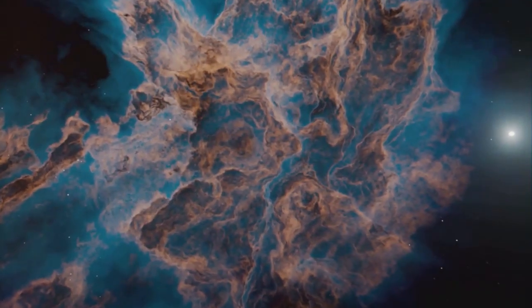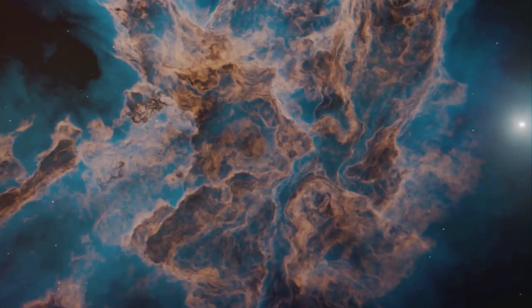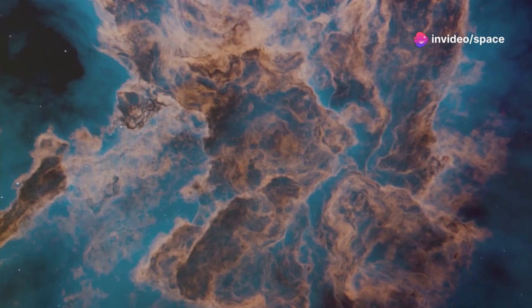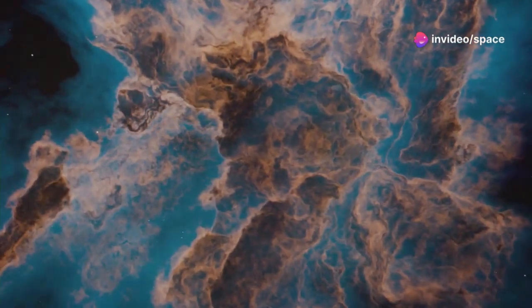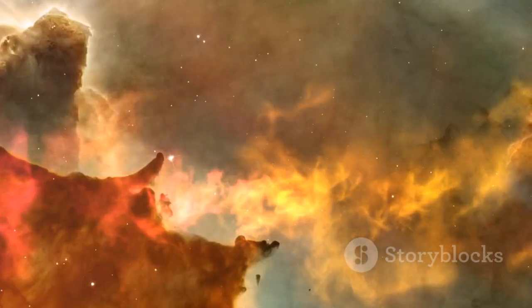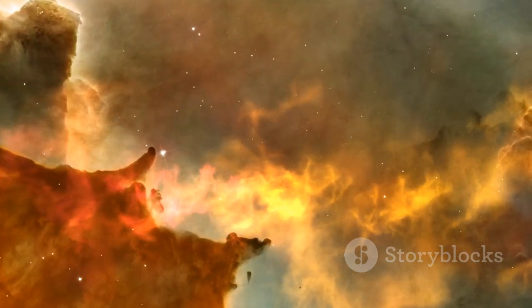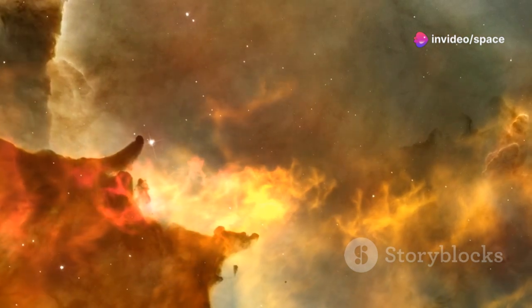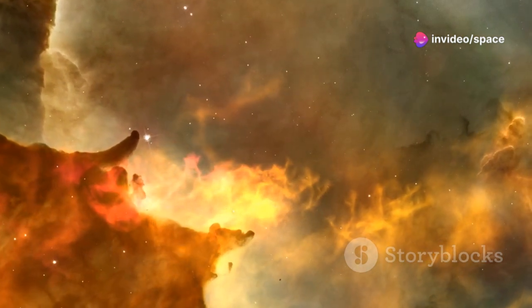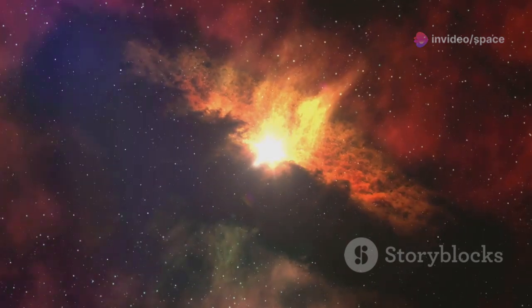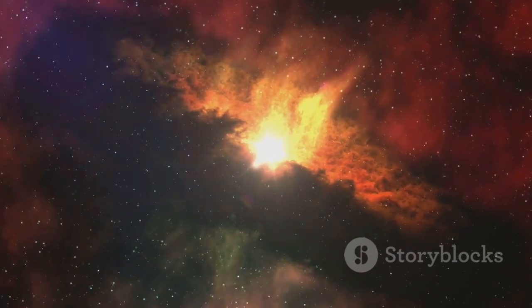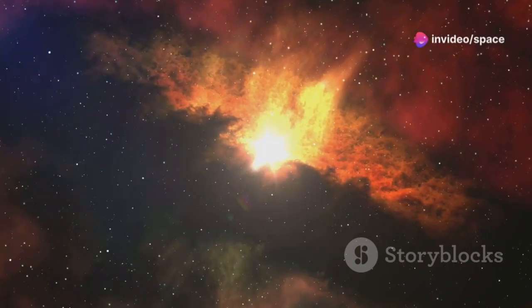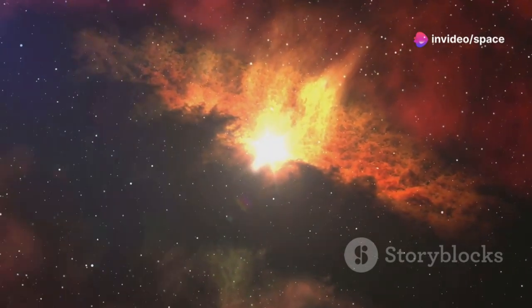One of the most iconic images captured by JWST is the cosmic cliffs in the Carina Nebula. This image has captivated both scientists and the public alike, showcasing the sheer beauty and complexity of these regions. This image shows a towering wall of gas and dust that resembles a mountain range. The scale and detail of this structure are awe-inspiring, highlighting the dynamic and turbulent nature of star-forming regions. The peaks of these cliffs are illuminated by the intense radiation from nearby massive stars. This radiation not only lights up the gas and dust, but also influences the formation of new stars within the nebula.